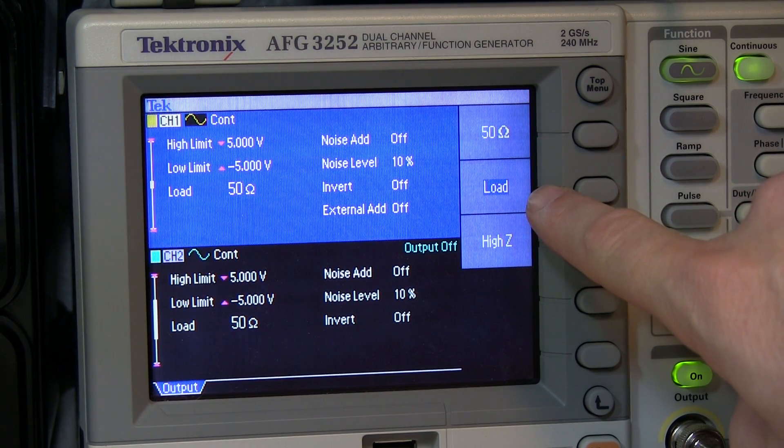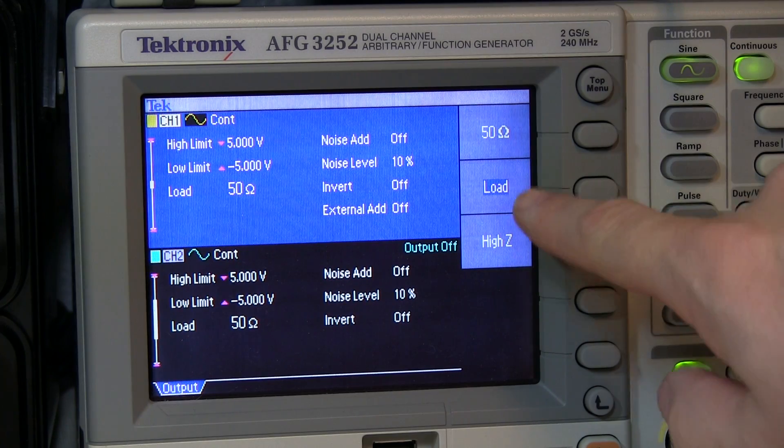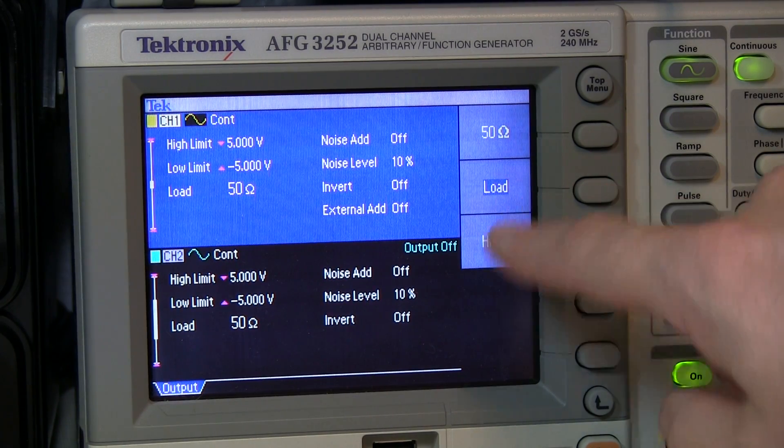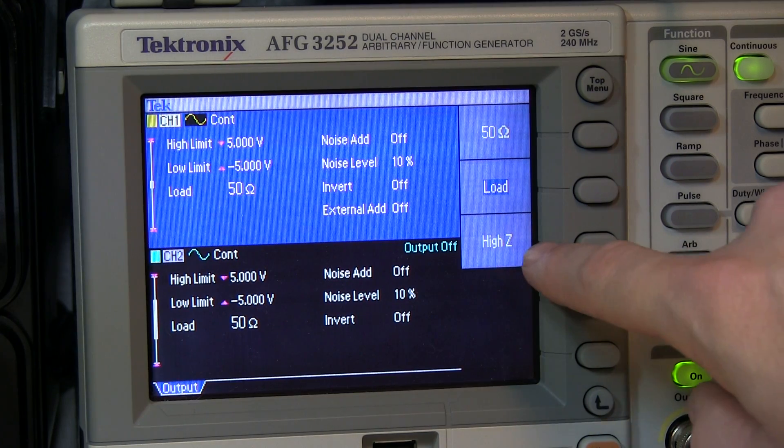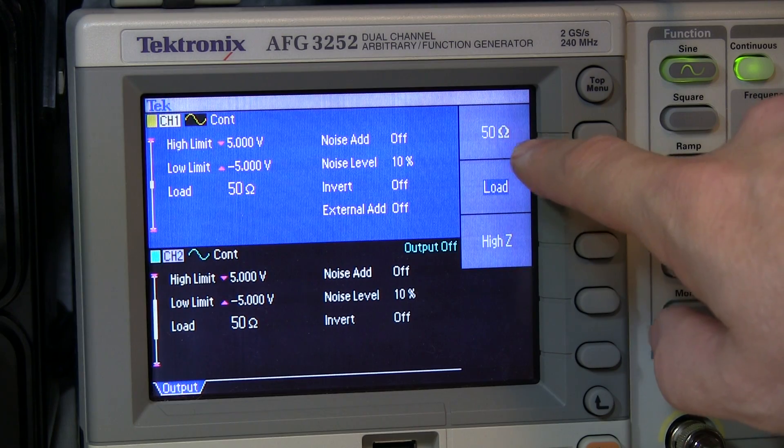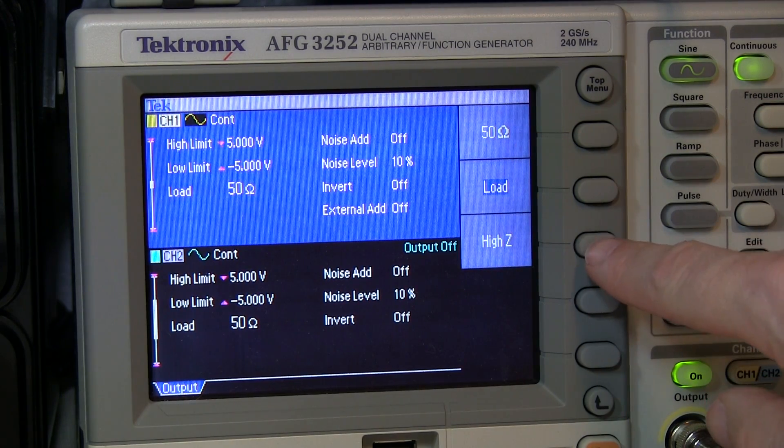So if I select load impedance, we have the choice of selecting 50 ohms, or we can dial in a specific load if we knew it was 70 ohms or 120 ohms or whatever the load is. Or we can dial in just high Z.